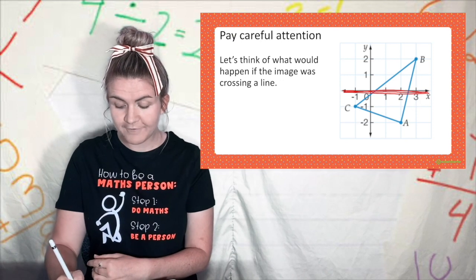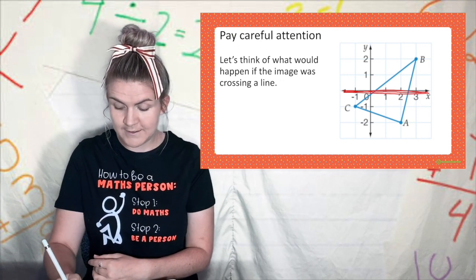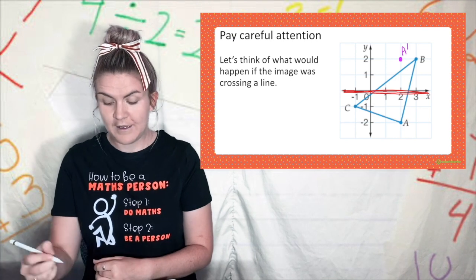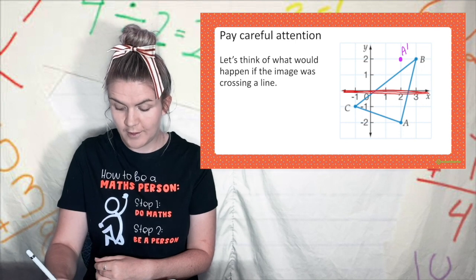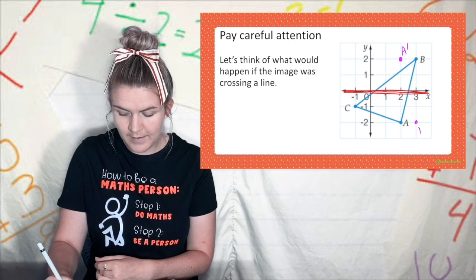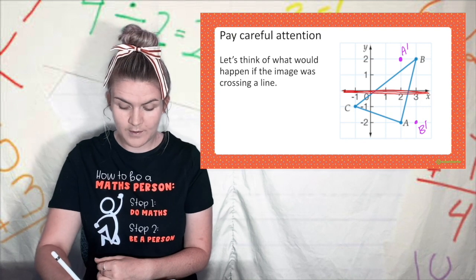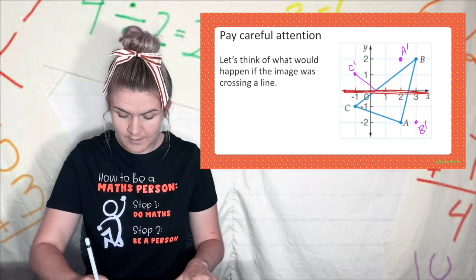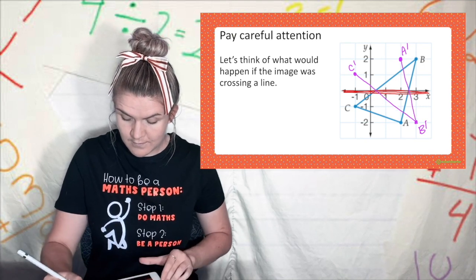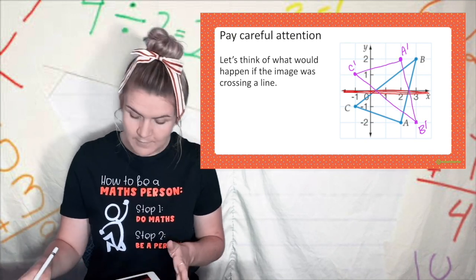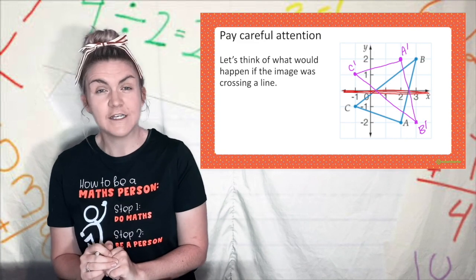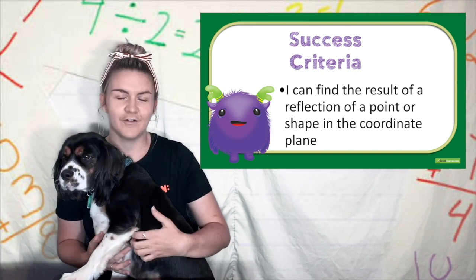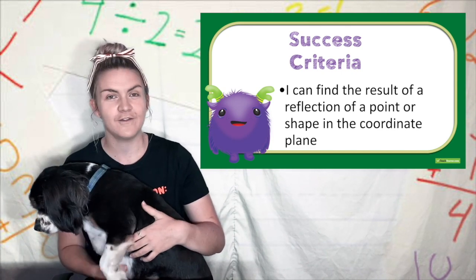So how far is a from the mirror line? That's two, so on the other side we do two, that's a prime. How far is b from the mirror line? Well that's two so we go one, two, b prime. And lastly c is one away so I go one on the other side, c prime. And then I'm going to use a ruler and connect up the dots. And I see now I have created a mirror image even if they cross over each other. That's okay. I hope now you can find the result of a reflection of a point or shape on the Cartesian plane.